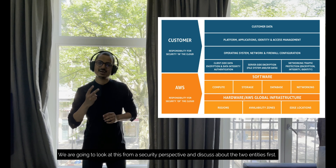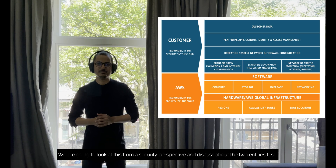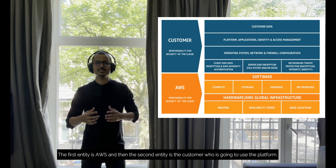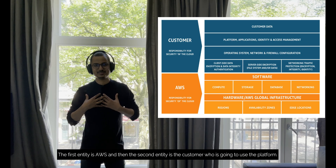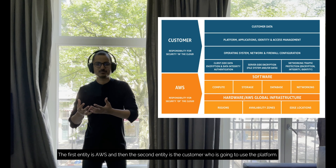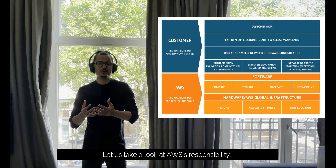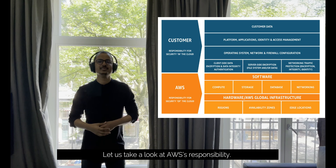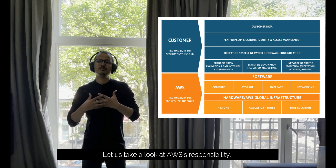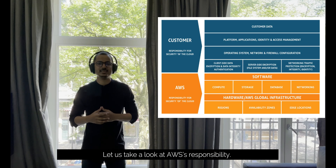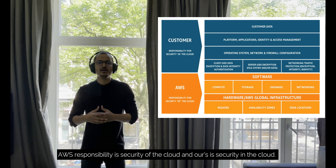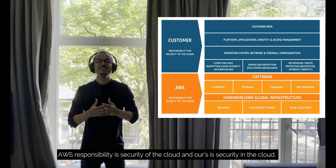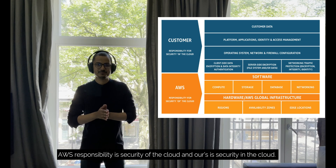Who are the two entities? One is AWS, and the other is the customer. If we are the customer, we are using the AWS platform. So there are two entities. AWS's responsibility is the security of the cloud, and our responsibility as customers is security in the cloud.